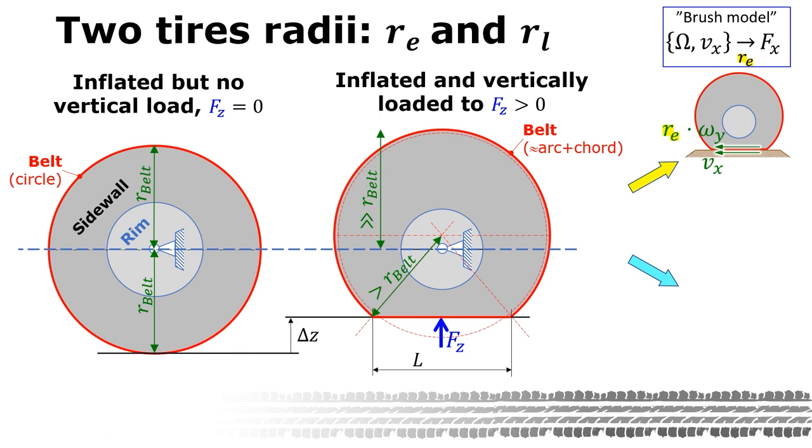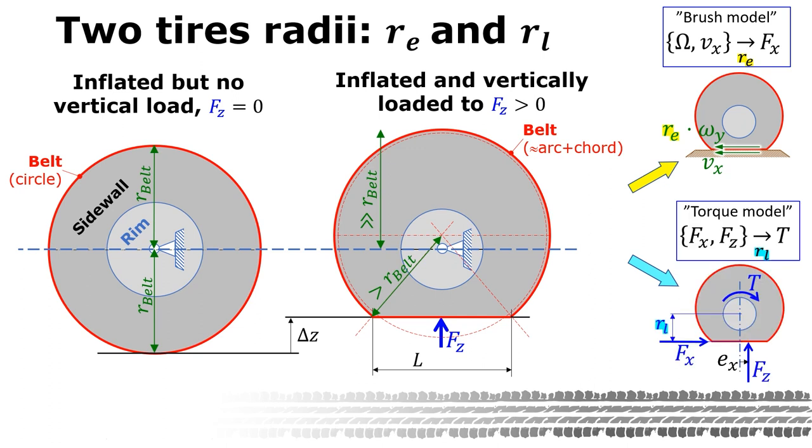Now we will continue with this in two sketches and aiming at definitions of each of the two radii. Up here is a sketch of the so-called brush model. It shows the velocities and we will use it to understand the effective rolling radius. And the lower sketch shows the forces and torques. We will use this to understand the other radius, the loaded radius, rl. In the following two slides, we will start from each of these two small sketches to understand each of the radii, the effective rolling radius and the loaded radius.